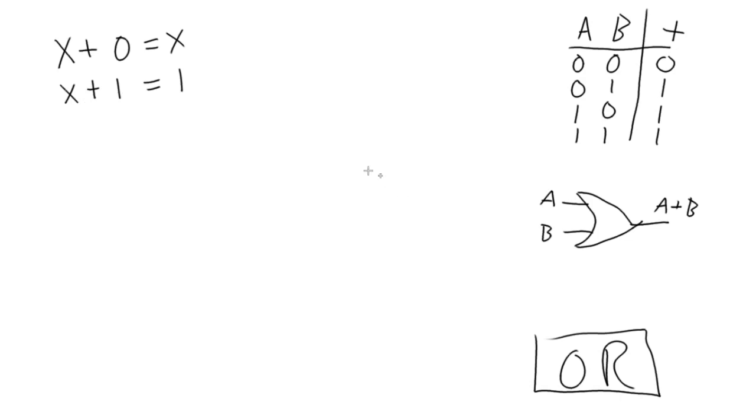So now, X OR'd with X just equals X. So let's look at our truth table for this one.